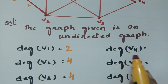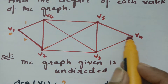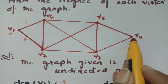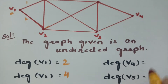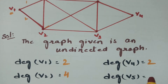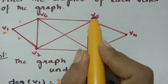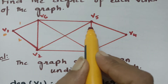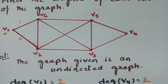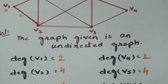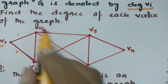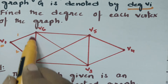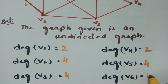Coming to v4, there are only two edges incident with it — 1 and 2 — therefore the degree is 2. For v5, the edges incident with it are 1, 2, 3, 4, therefore the degree is 4. And for v6, there are also 4 edges incident with it — 1, 2, 3, 4 — so the degree here is 4.